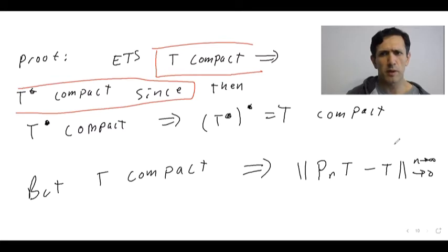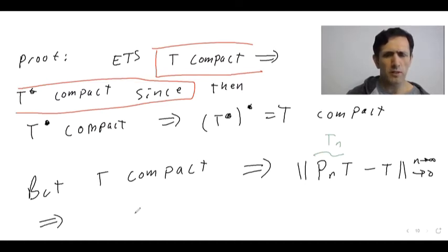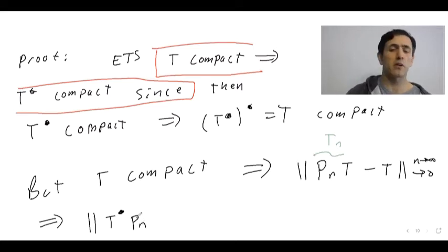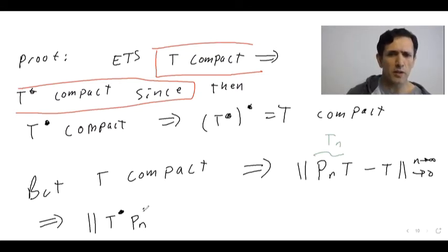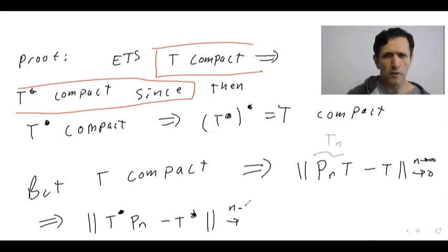Really this is more of a corollary of the proof of the last result. T compact means we proved that PN composed with T, which I called TN, approaches T in operator norm as N goes to infinity. I want this explicit form because what does this tell me when we take adjoints? Taking adjoints gives T star Pn. Remember, Pn is the orthogonal projection onto the span of E1 up to EN, so it's self-adjoint.